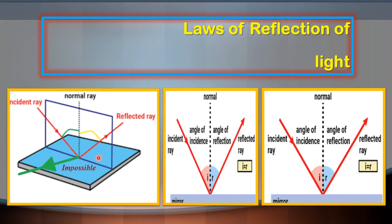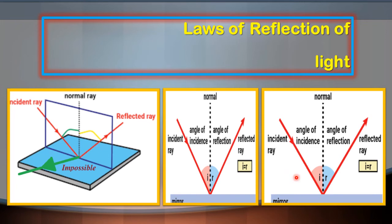Second Law of Reflection کے according، angle of incidence is equal to angle of reflection. اس کا مطلب یہ ہے کہ incident ray جو angle بناتی ہے normal کے ساتھ، وہ always equal ہوتا ہے to the angle جو reflected ray بناتی ہے normal کے ساتھ. اگر angle of incidence چھوٹا ہے تو angle of reflection بھی چھوٹا ہوگا. اگر ہم angle of incidence کو increase کرتے ہیں تو reflected ray کا angle بھی بڑا ہوگا. So angle of incidence is equal to angle of reflection.